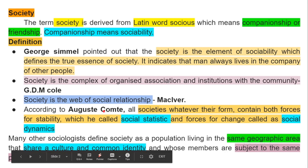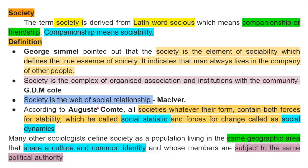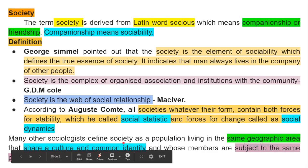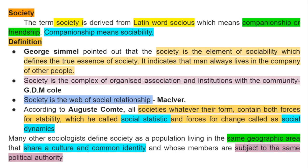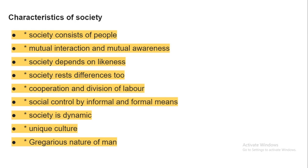MacIver defined society as a web of social relationships. Auguste Comte said that all societies, whatever their form, contain both forces of stability — called social statics — and forces of change — called social dynamics. Many other sociologists define society as a population living in the same geographical area who share their culture and common identity, and whose members are subject to the same political authority.